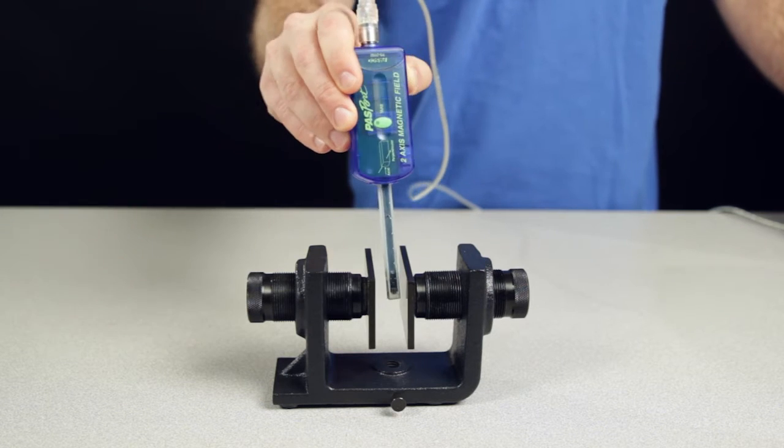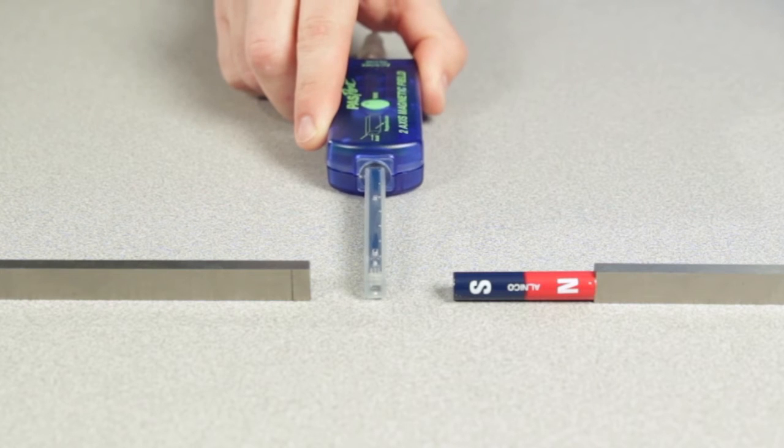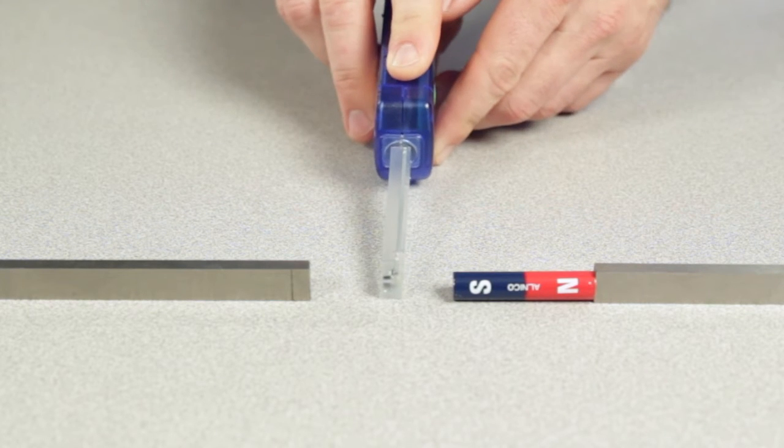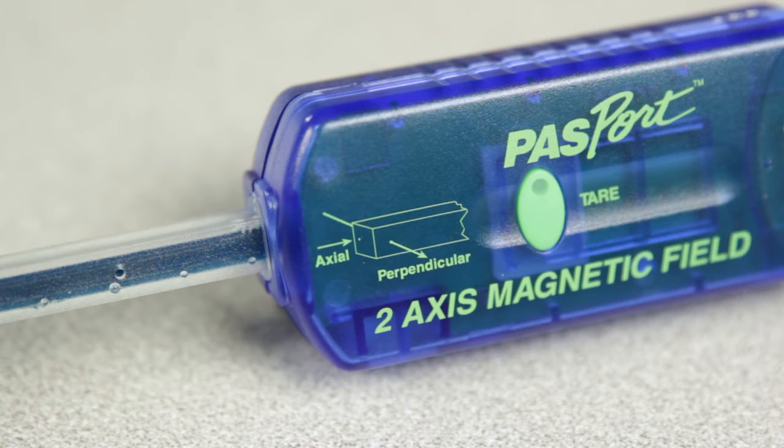The sensor indicates direction using positive and negative measured values where positive values represent axial and perpendicular field strength component values that are parallel to and in the same direction as the arrows in the diagram printed on the sensor case.